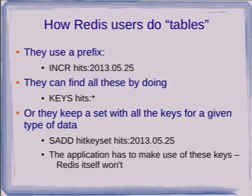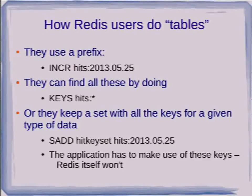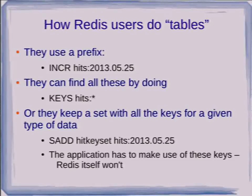Or what they do is keep the keys in a separate set. So you might have a named set called a key-hit-set, add your key to that, and then when you want to find all the keys in your set, instead of using the KEYS command you simply get the members from this set, which is a very fast operation. The downside is that the application has to make use of that — Redis itself is unable to match up the members of a set to anything else, so your application has to do all the work.